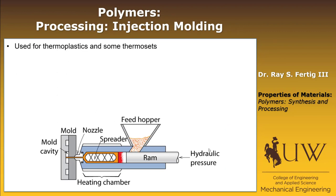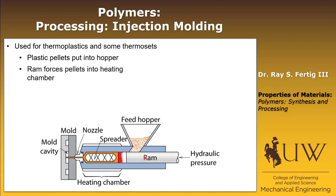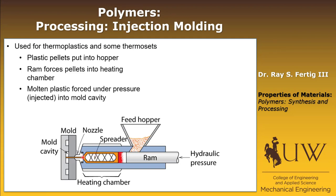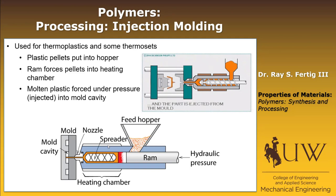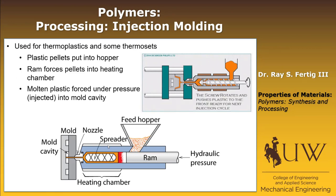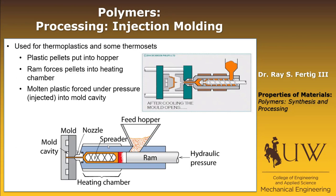Now let's talk about injection molding. In this case, plastic pellets are put into a hopper. Then there's a hydraulic ram that forces the pellets into a heating chamber, heating them into a liquid under pressure. This molten plastic is then forced — injected — under pressure into the mold cavity and forms the part. The animation shows the ram creating the pressure, squeezing the polymer into the mold, the mold cools, the polymer cools, becomes a solid part, and there you have it.